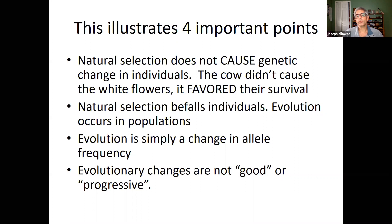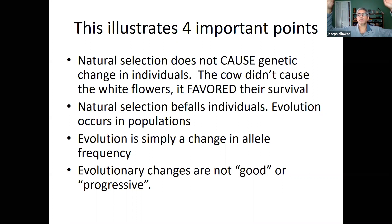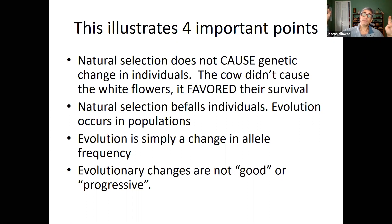Think about the ascent of man — crawling on all fours, then slightly more upright, then walking on two legs. That implies progressiveness, but that's not really the case. If there was some natural selective event that made it more beneficial for humans to crawl on all fours again, we would. What might be an advantage in one environment may no longer be an advantage when the environment changes — we saw that with the peas and the cow.